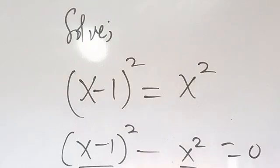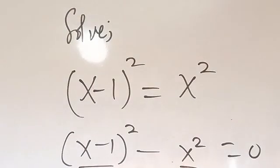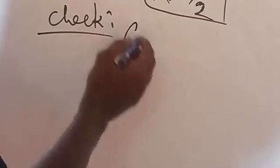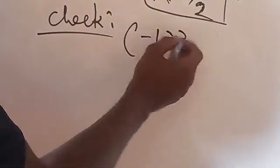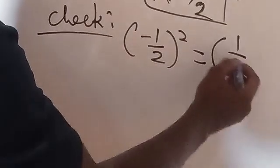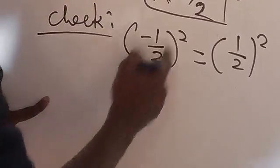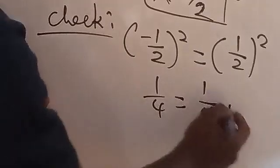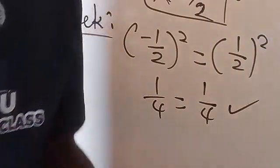So now you can check. If you want to do the checking. To do the checking now, you know that here you can put 1 over 2 here. 1 over 2 minus 1. You're going to have minus 1 over 2 all squared. So equals, we have here 1 over 2 all squared. So now minus 1 raised to power 2. We're going to have 1. 2 raised to power 2. That will be 4. The same thing here. 1 over 1 over 4. So you can see that this equation satisfies. The left hand side is equal to the right hand side.